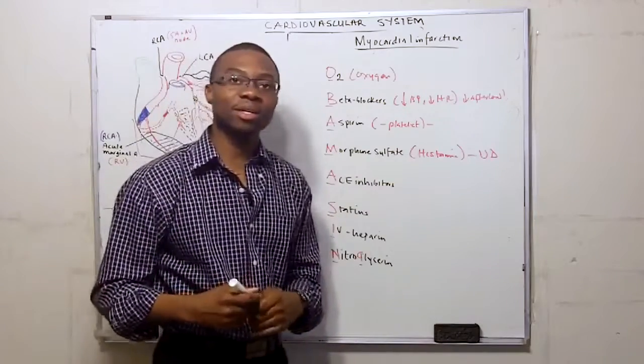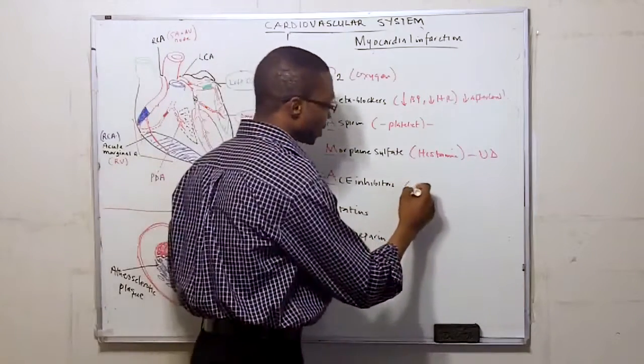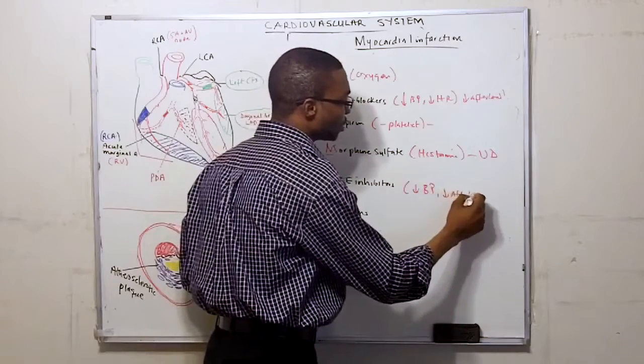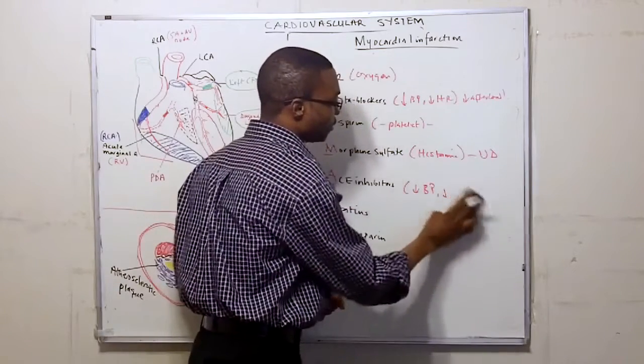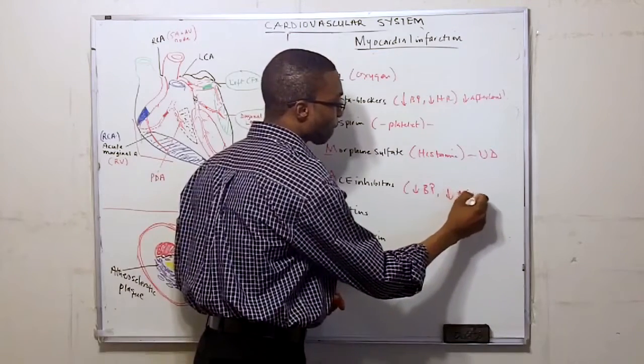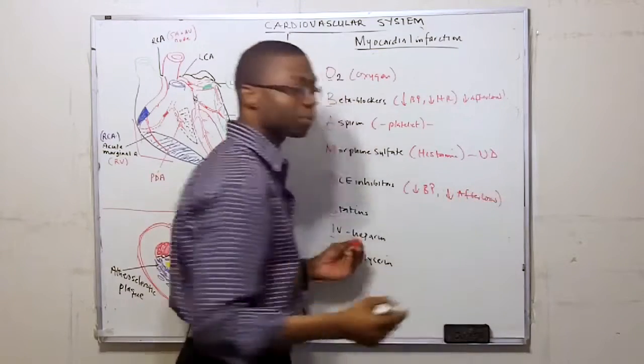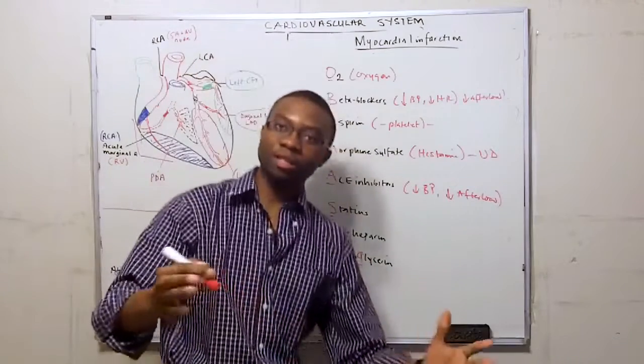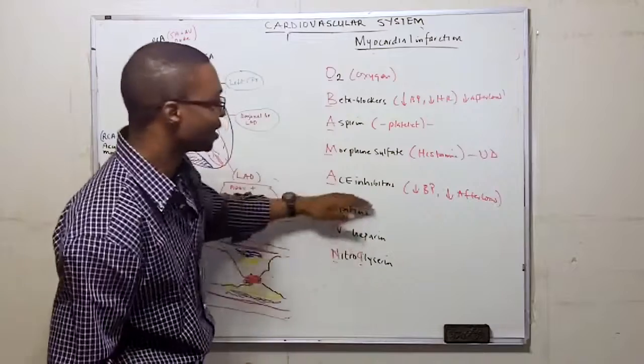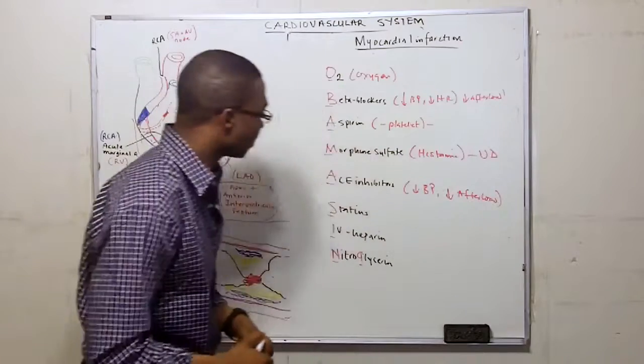You have to put them on ACE inhibitors, because ACE inhibitors are going to decrease their blood pressure, decrease their afterload, prevent vasoconstriction of their blood vessels, and also prevent heart remodeling. Carvedilol—oh, that's actually the beta blocker, so we take that back. ACE inhibitor: lisinopril.